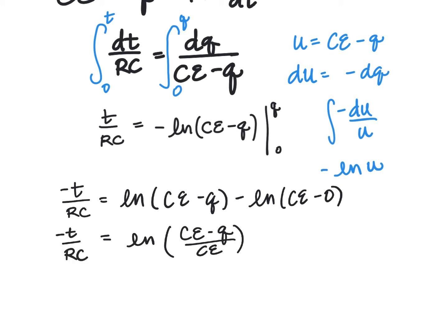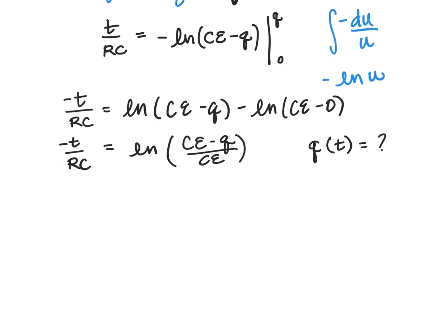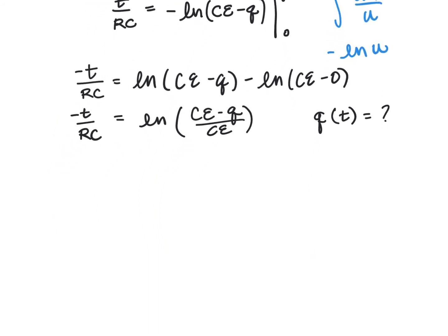Now the goal is to figure out what is the charge as a function of time for this capacitor. So in order to get Q out of the equation, I'm going to have to raise both sides with the natural log E, so that I'll have e to the negative T over RC is equal to capacitance times EMF minus Q over capacitance times EMF.